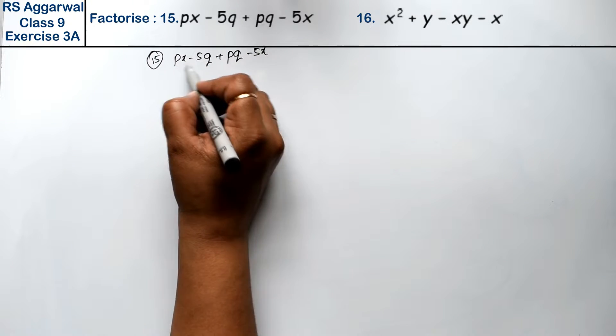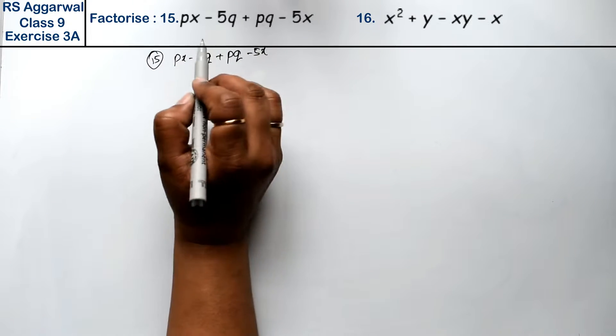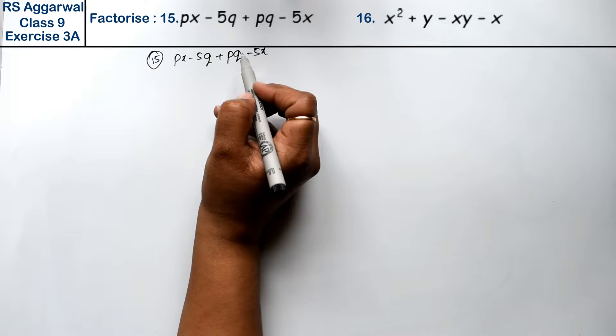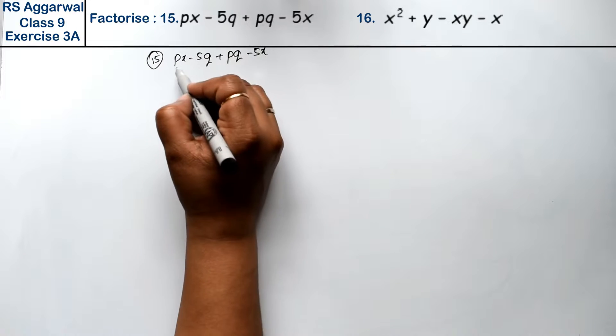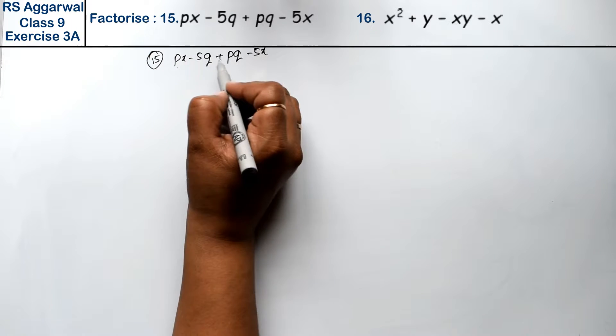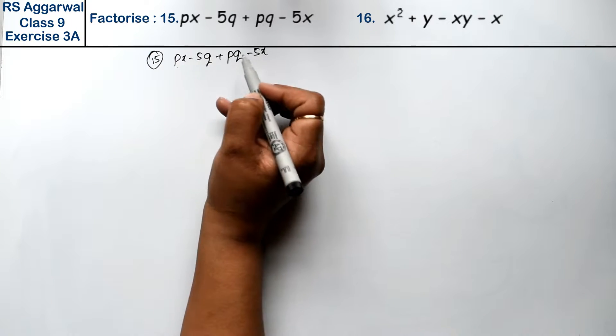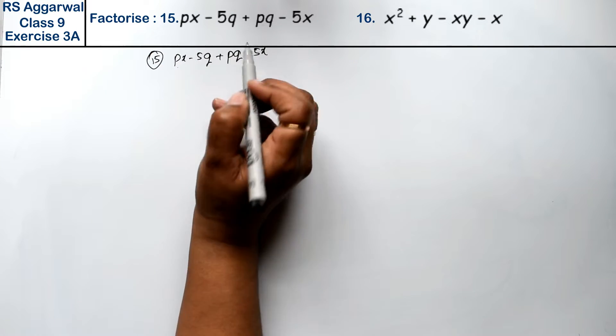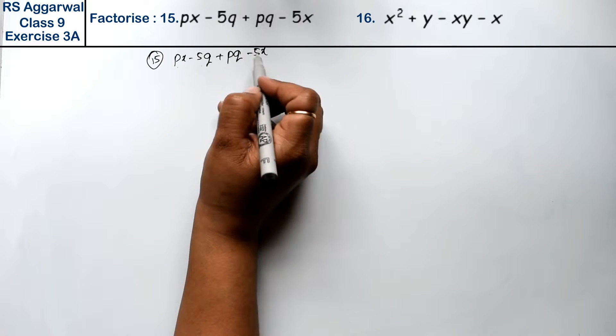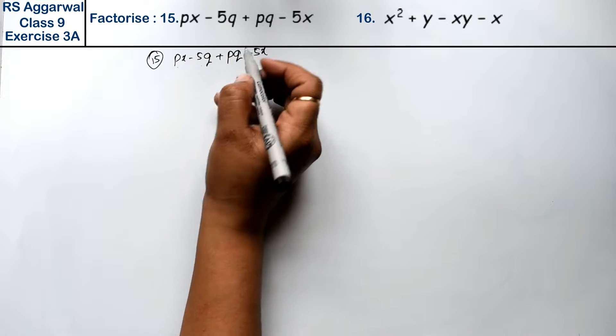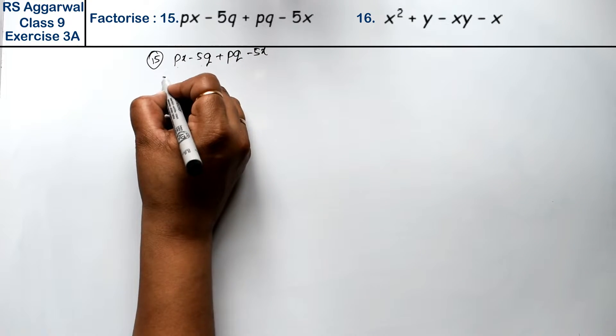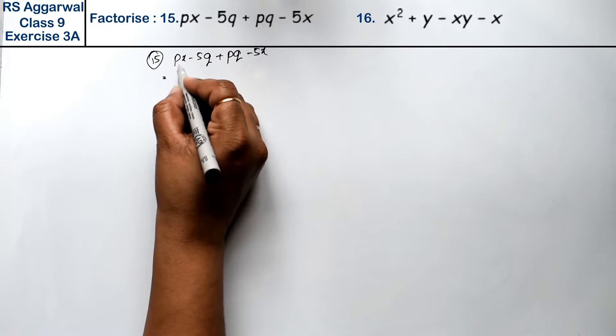If we take the first two terms, then nothing is common. So if we take these two, then p is common in the two, and if we take these two, then 5 is common. So we will make pairs.